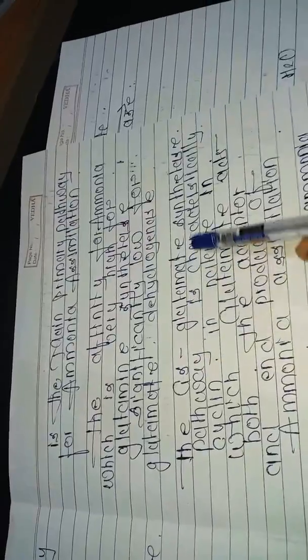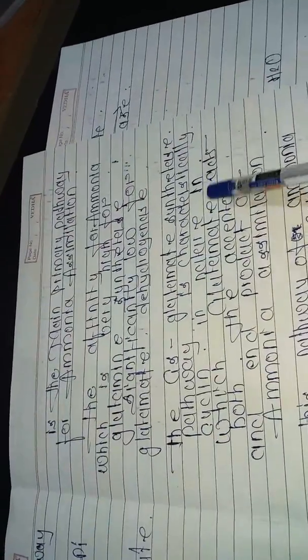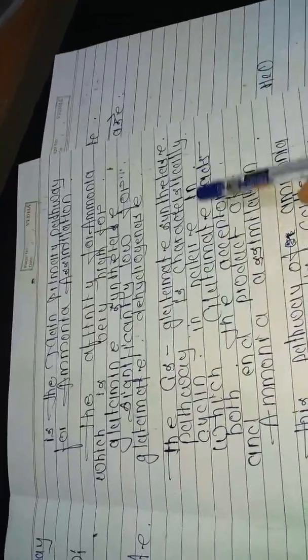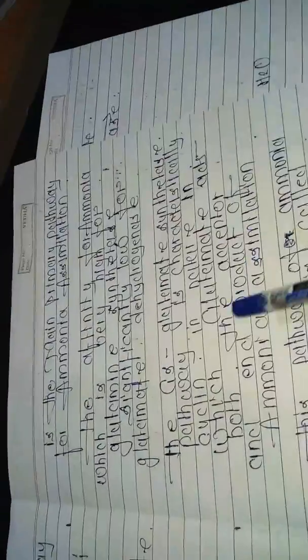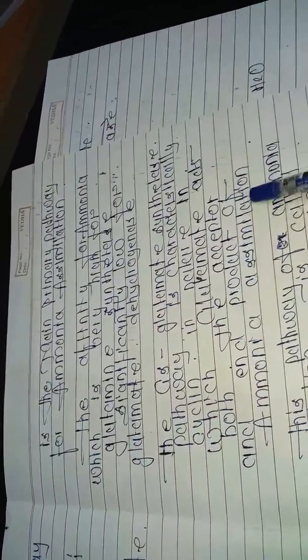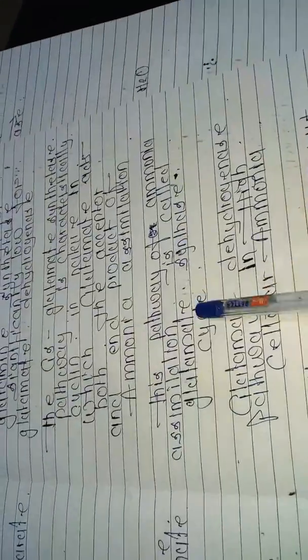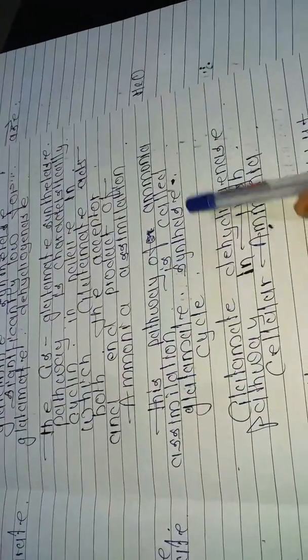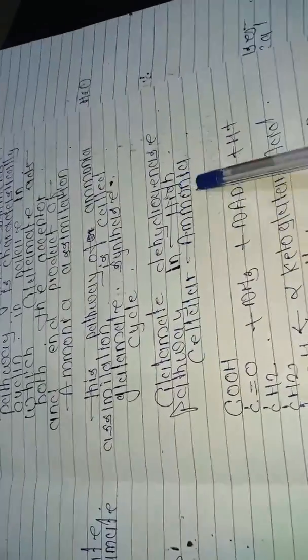The GS-glutamate synthase pathway is characteristically cyclic in nature, in which glutamate acts as both the acceptor and product of ammonia assimilation. This pathway is called the glutamate synthase cycle. The glutamate dehydrogenase pathway operates in high cellular ammonia conditions.